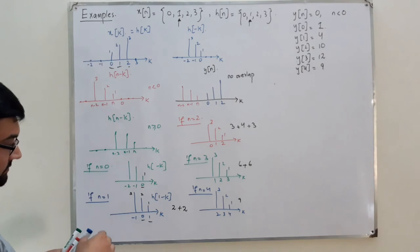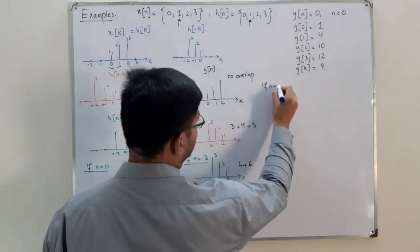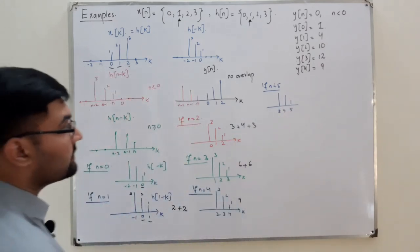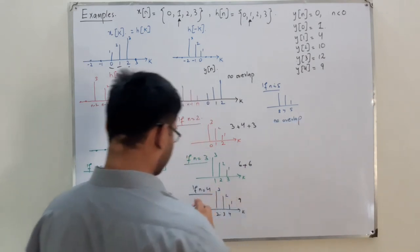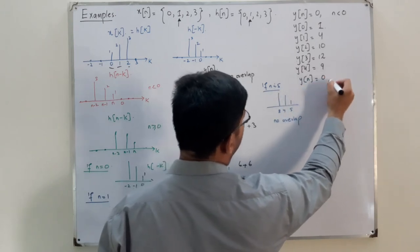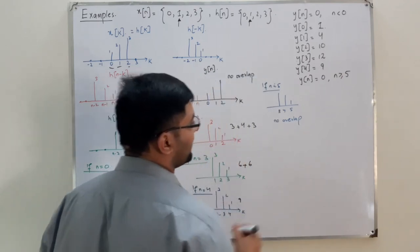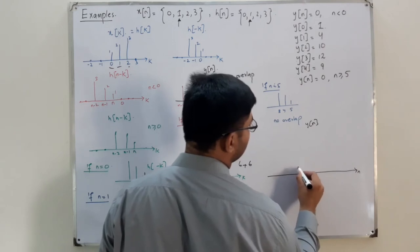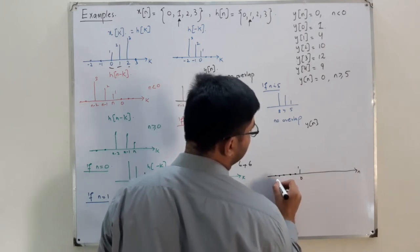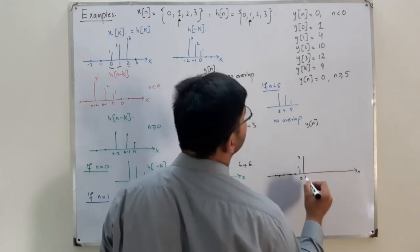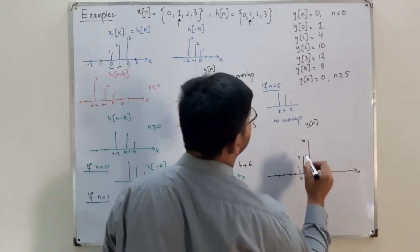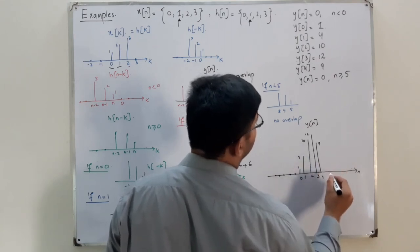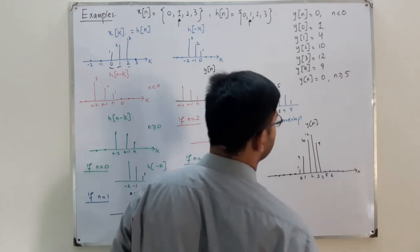For n equals 5, h(5 minus k) is located at 5, 4, and 3 — there is no overlap with x(k). So y(n) equals 0 for n greater than or equal to 5. Drawing the result: at n=0 it's 1, at n=1 it's 4, at n=2 it's 10, at n=3 it's 12, at n=4 it's 9, and it's 0 for n≥5.